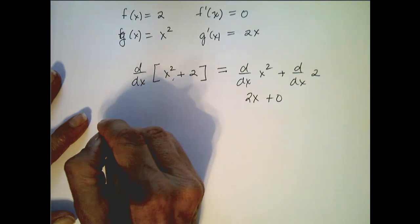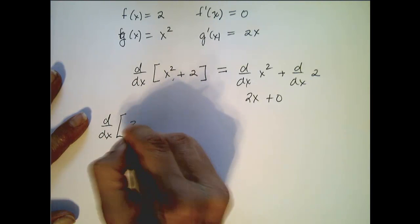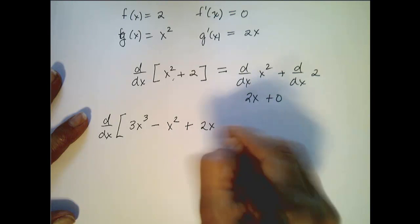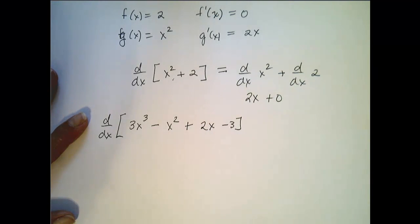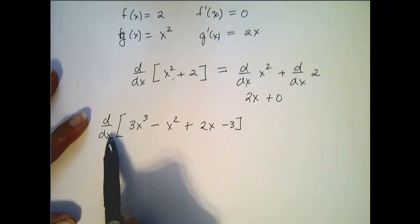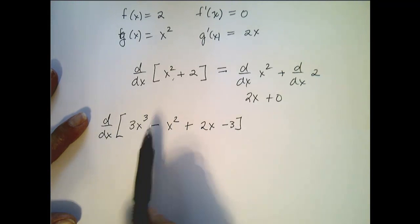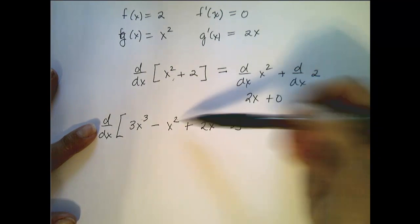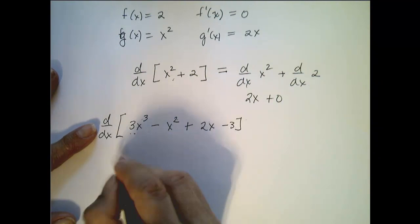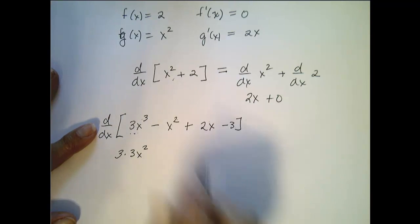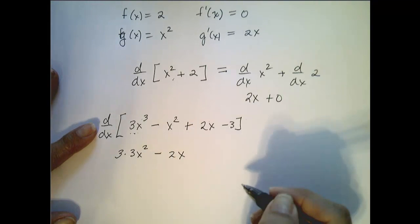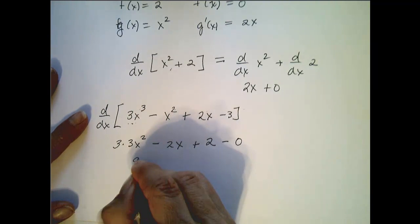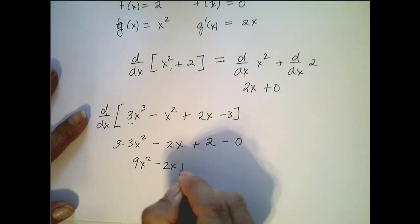Let's look at another example. Let's say I want to take the derivative of 3x cubed minus x squared plus 2x minus 3. What the sum and difference rule tells me is that I can take the derivative of each term. So the derivative of 3x cubed is 3 times 3x squared, minus 2x, plus 2, minus 0. Cleaning that up, it's 9x squared minus 2x plus 2.